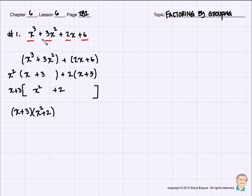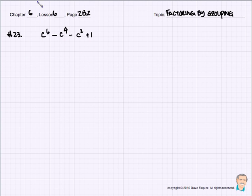The clue is we're going to have four terms in each of these problems. Let's try something a little more challenging. Number 23: c to the 6th minus c to the 4th minus c squared plus 1. Yes, we do have four terms. Let's group them.